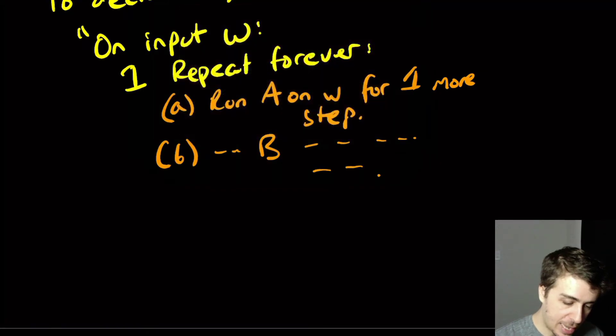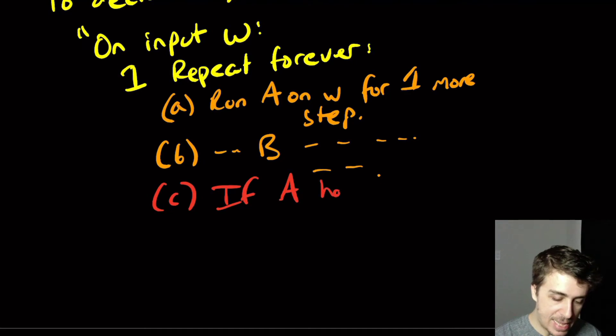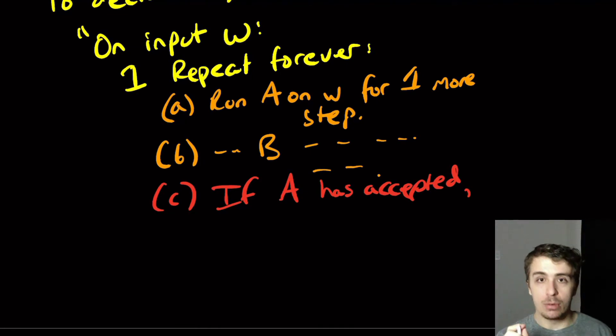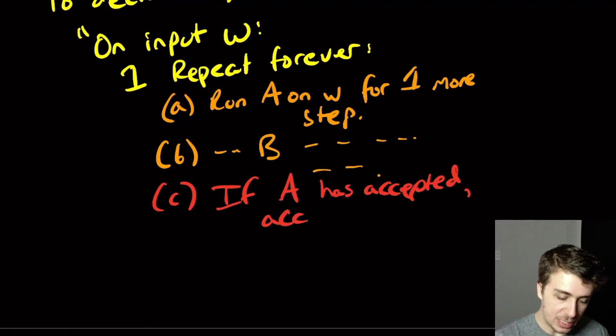So how are we going to handle this, though? So if A has accepted at this point, then what are we going to do? Well, A is the recognizer for the language L, and we're trying to decide L. So if A has accepted, then we need to accept also, because it has the same language that we're trying to decide in the first place. So we need to say accept.